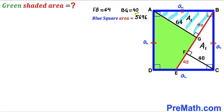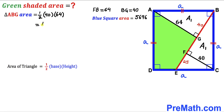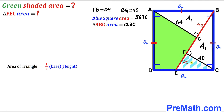Our blue square area is 5696 square units. Now we calculate the area of triangle ABG using the formula: area = ½ × base × height. The base is 40 and the height is 64, so the area of triangle ABG = ½ × 40 × 64 = 1280 square units.